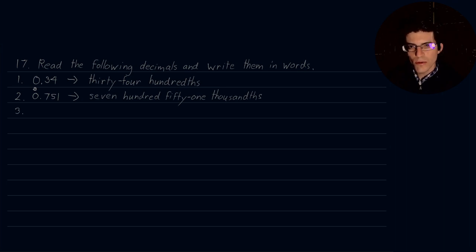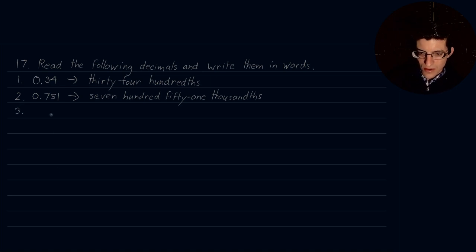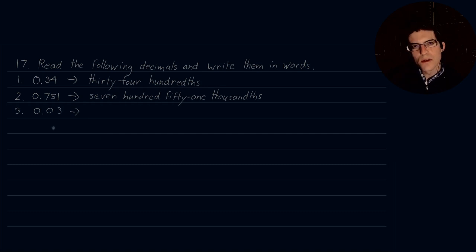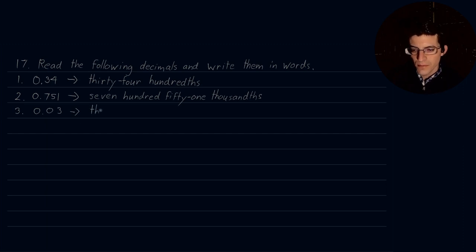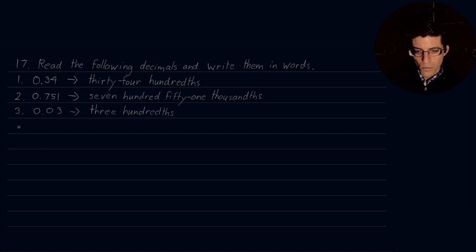Number three is 0.03. What is this? Tenths, hundredths. So this is three hundredths. Three hundredths.